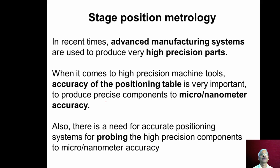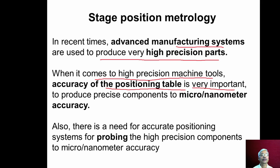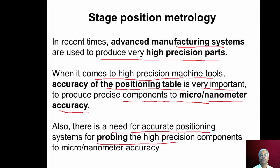With this we conclude the discussion on in-process gauging and move to stage position metrology. In recent times, advanced manufacturing systems are used to produce very high precision parts. The accuracy of the positioning table or positioning stages is very important so that precise components can be produced to micrometer or nanometer accuracy, and accurate positioning systems are needed for probing high-precision components.